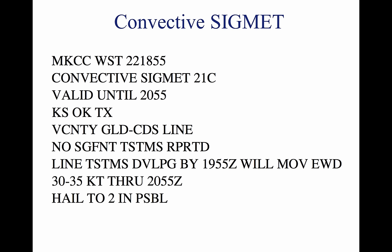Convective SIGMETs are issued for each area of the contiguous 48 states, but not Alaska or Hawaii. They are issued for the Eastern (E), Western (W), and Central (C) United States. Each report is issued at 55 minutes past the hour, but special reports can be issued during the interim for any reason. Each forecast is valid for two hours. They are numbered sequentially each day from 1 to 99, beginning at 00Z. If no hazardous weather exists, the Convective SIGMET is still issued, however it states Convective SIGMET: none.